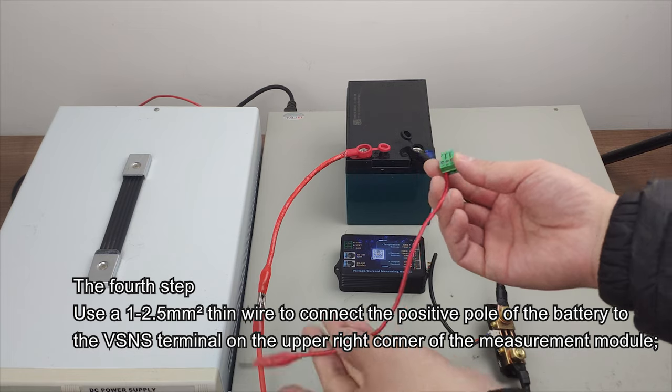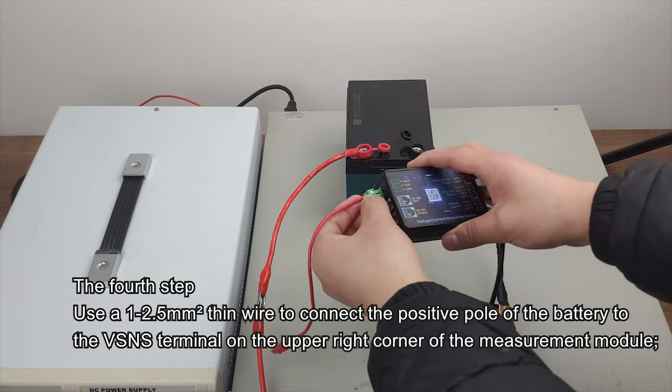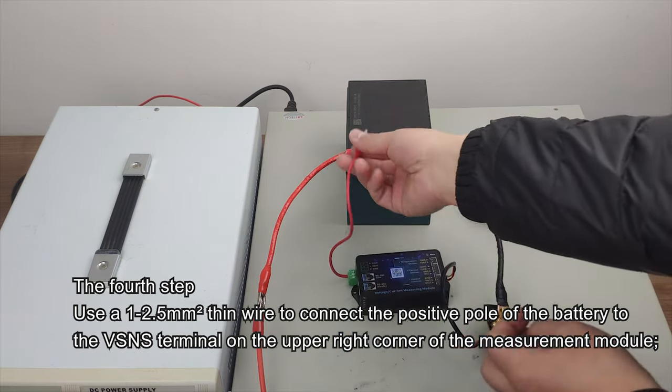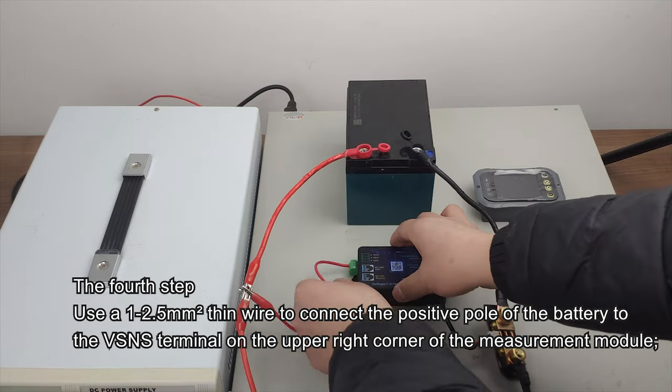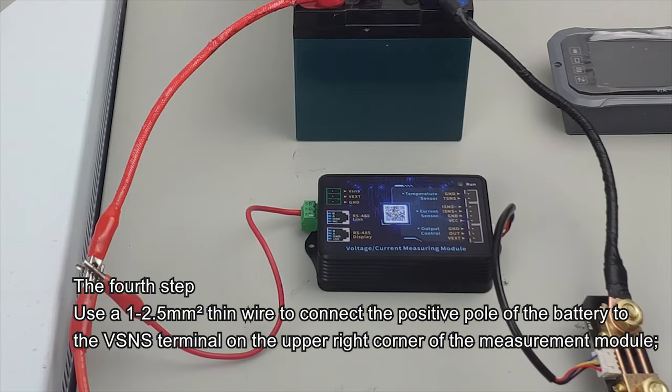The fourth step: Use a 1 to 2.5 mm thin wire to connect the positive pole of the battery to the VSNS terminal on the upper right corner of the measurement module.